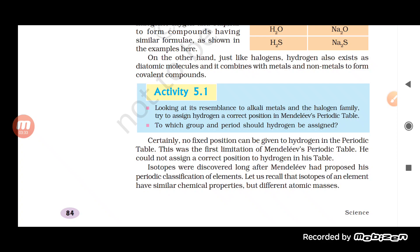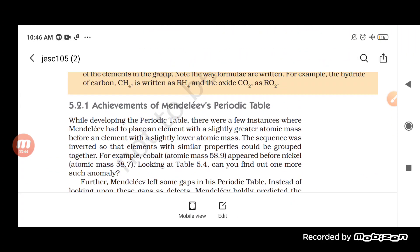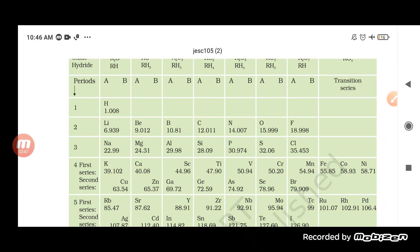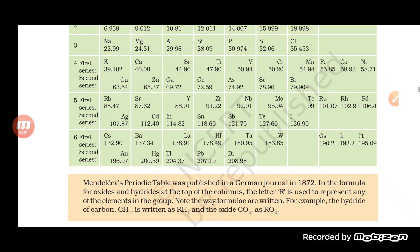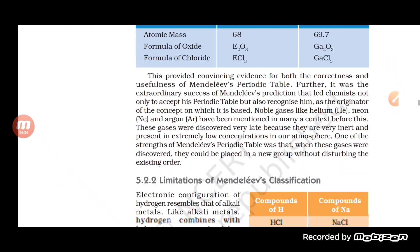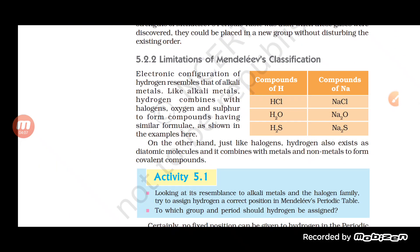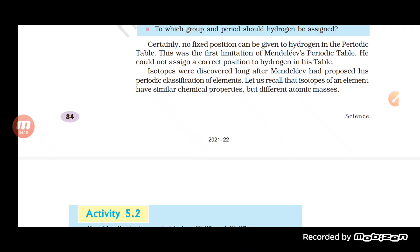In Mendeleev's periodic table, hydrogen is kept with the alkali metals, but it also shows properties of the halogen group. There was no specific position assigned to hydrogen that accounts for it showing properties of both the alkali group and the halogen group. This is the first limitation of the Mendeleev periodic table — it does not give the correct position of hydrogen.